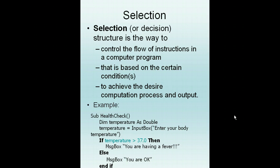In our programs, we normally have to handle many circumstances where if this happens, then we will do this, else we will do something. So it's an if-else. This is called a selection statement. It controls the flow of instructions in a computer program and it's based on certain conditions.